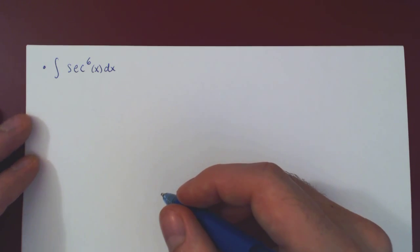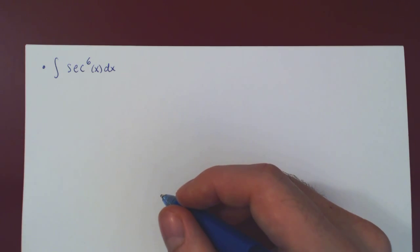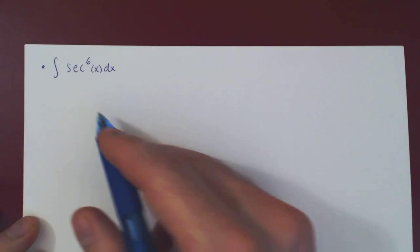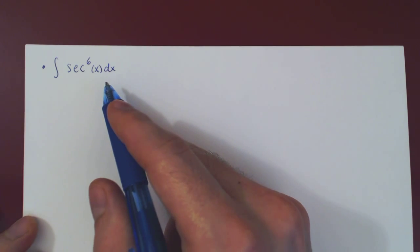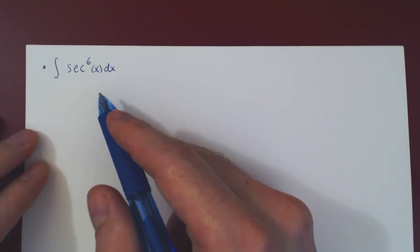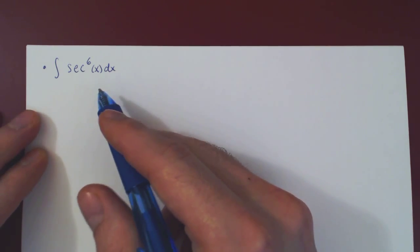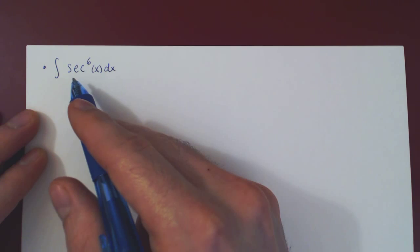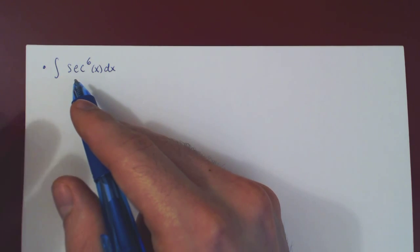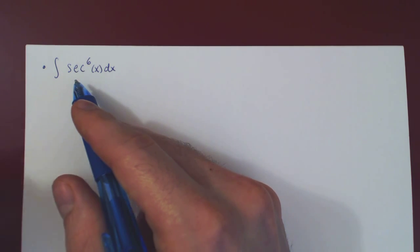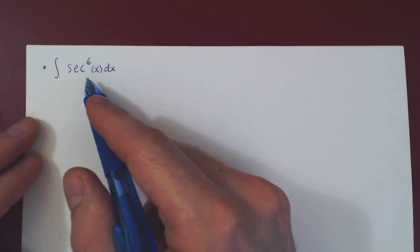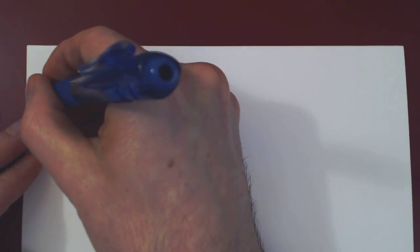In this video, we will consider two additional examples of a trigonometric integral involving, on the one hand, a single secant, and on the other hand, a single tangent. We have two options: we can factor a secant squared or a secant tangent. As there is no tangent, we'll try and factor a secant squared.